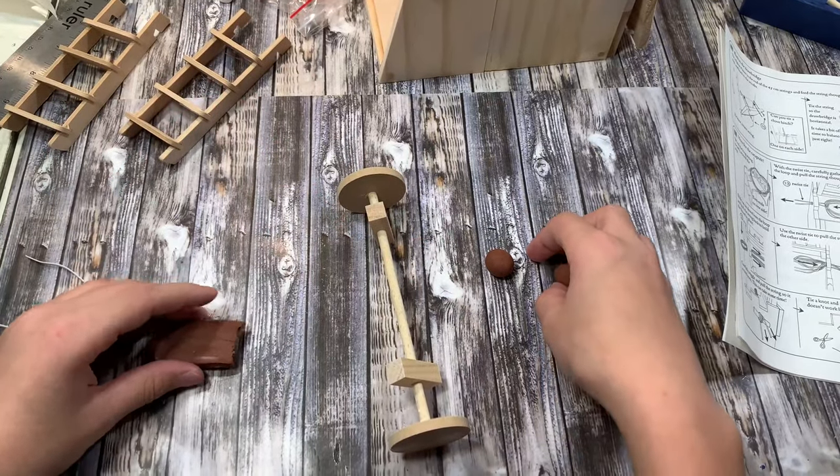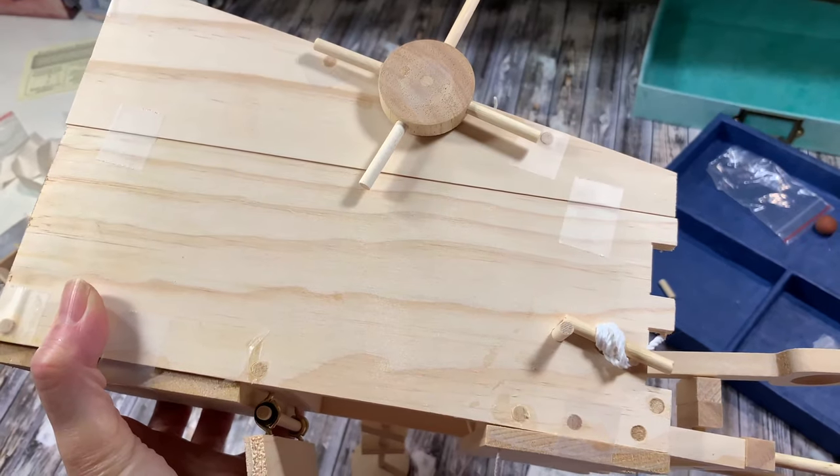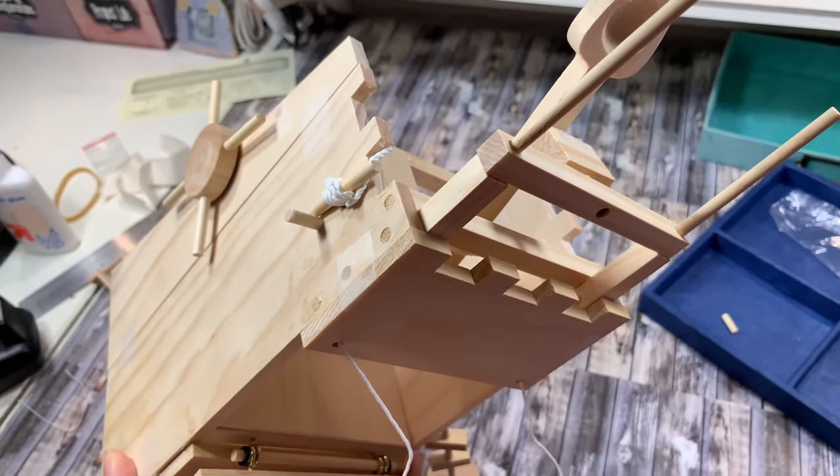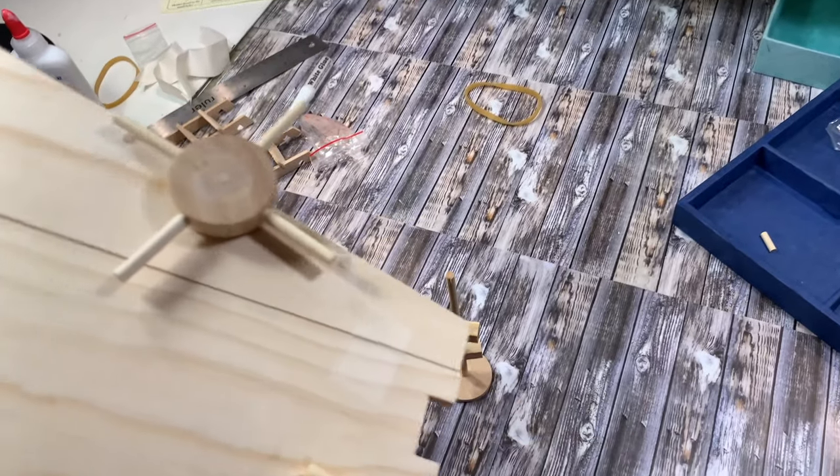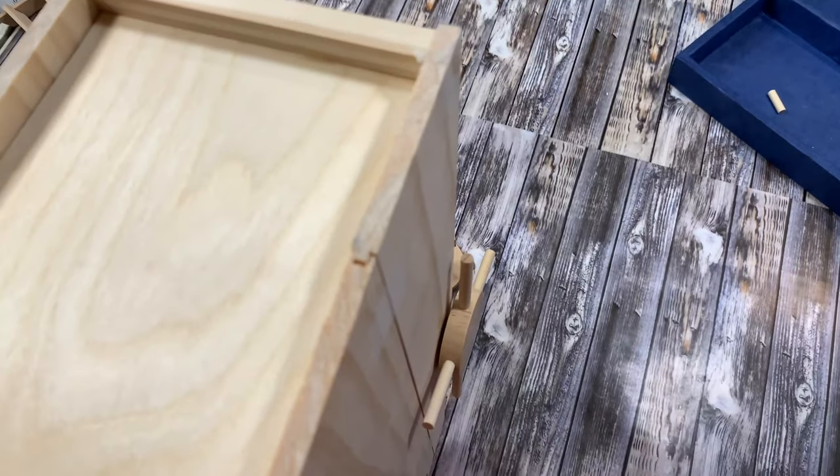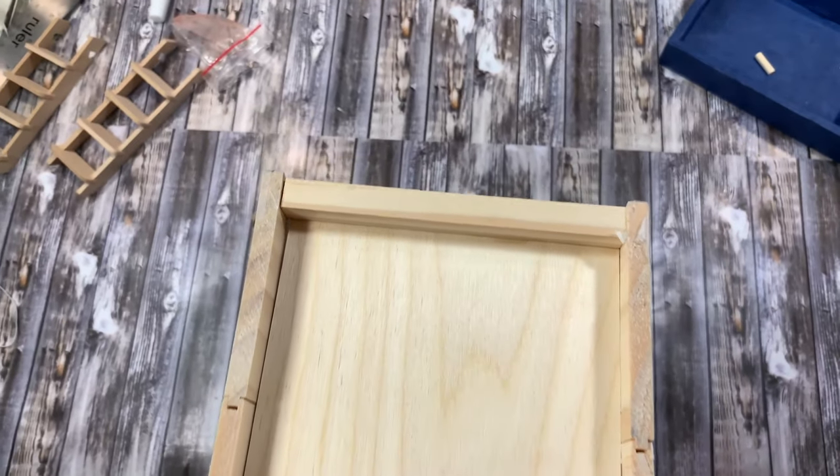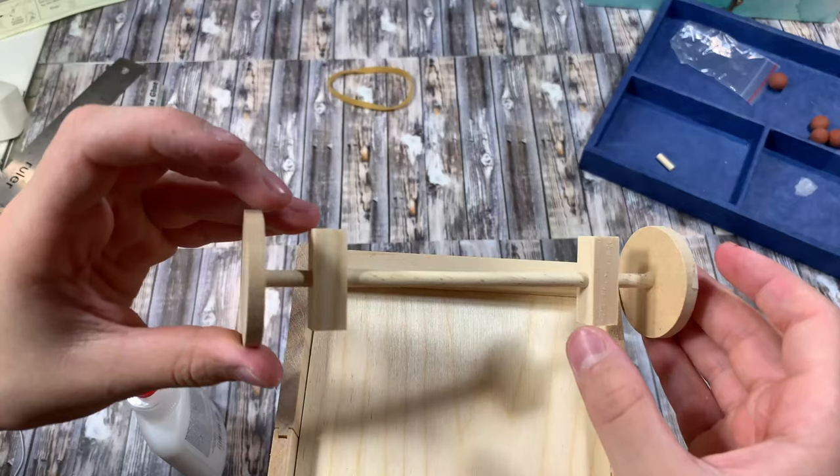So the kit also comes with some clay and I made the mistake of thinking it was polymer clay that needed to be baked so I ruined the clay from this kit, but that's okay we end up using rocks and other projectiles when we actually use the catapult at the top of the siege tower.